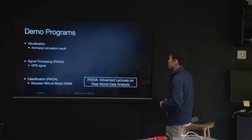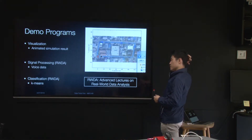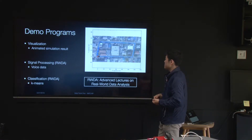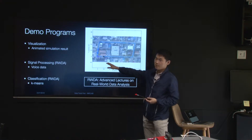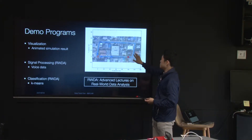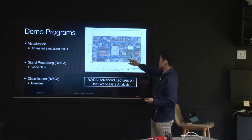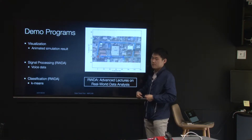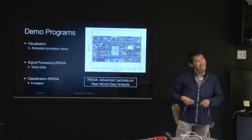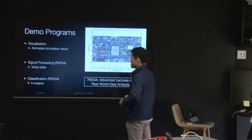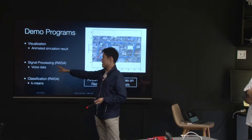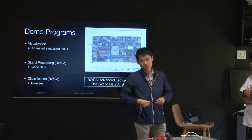Let's look at some demonstration programs. Here is the visualization function in MATLAB — this is a captured MATLAB window. You can create animations very easily. This particular demo shows an animated simulation result: a car moving with other cars following it. In later semesters, you will write code for signal processing or image classification using MATLAB.